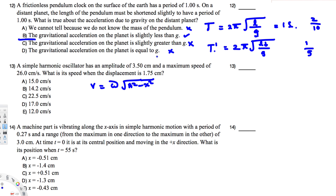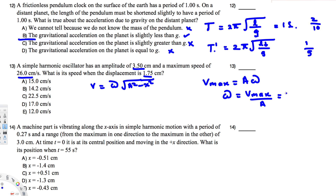We have the amplitude and the displacement given. We need to find omega. The maximum speed is v_max = Aω. Since v_max and amplitude are both provided, we can find omega: ω = v_max / A = 26 cm/s ÷ 3.5 cm, which gives 7.428 radians per second.